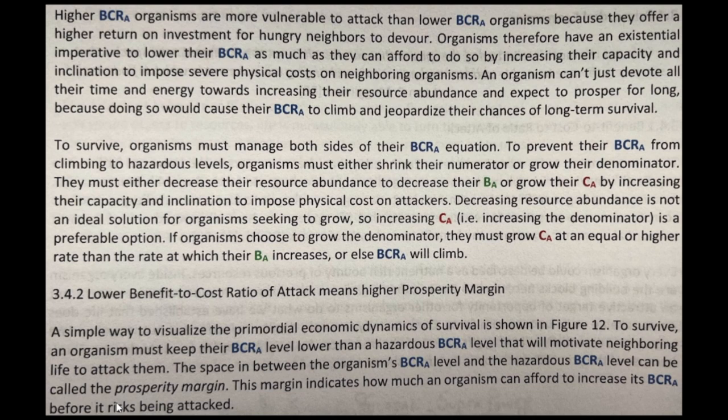They must either decrease their resource abundance to decrease BA, or grow their CA by increasing their capacity and inclination to impose physical costs on attackers. Decreasing resource abundance is not an ideal solution for organisms seeking to grow, so increasing CA — the cost of attack, i.e. growing the denominator — is a preferable option. If organisms choose to grow the denominator, they must grow their cost of attack at an equal or higher rate than the rate at which their benefit of attack increases, or else their benefit-to-cost ratio of attack will climb.